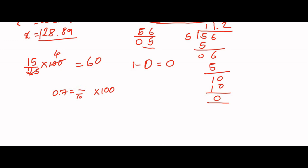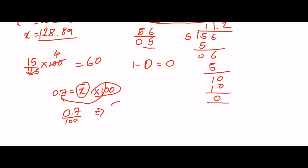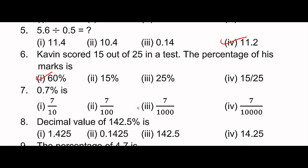0.7% — the percentage sign means divide by 100. So 0.7% equals 0.7 divided by 100, which gives 0.007. If you have 1 decimal point, 0.7 divided by 1000. So the answer is option 3: 0.007.